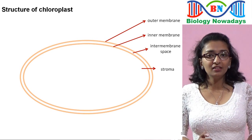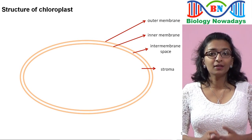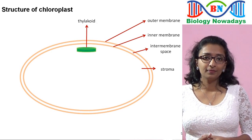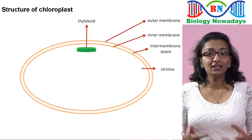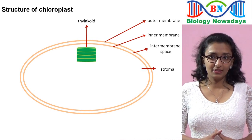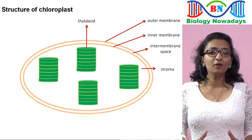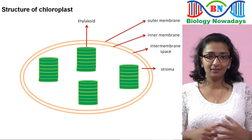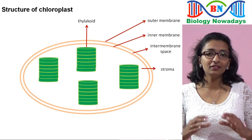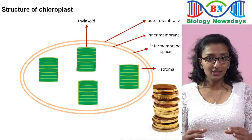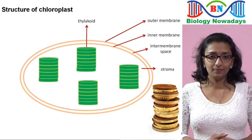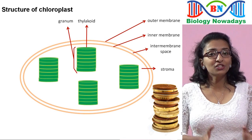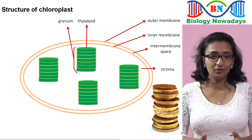In addition to the inner and outer membranes of the envelope, chloroplasts have a third membrane system called the thylakoid membrane. This membrane forms a network of flattened sacs called thylakoids — the word thylakoid is derived from the Greek word thylakos, meaning sac. Thylakoids are arranged in orderly stacks called grana, which resemble a stack of coins. A single stack of thylakoids is called a granum, and each granum contains around 10 to 20 thylakoids.